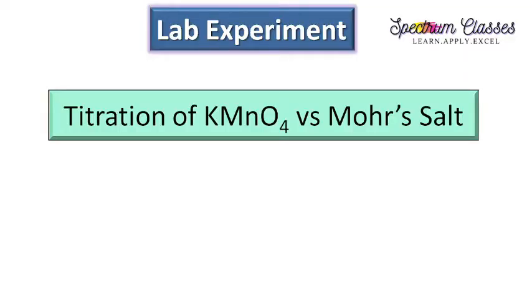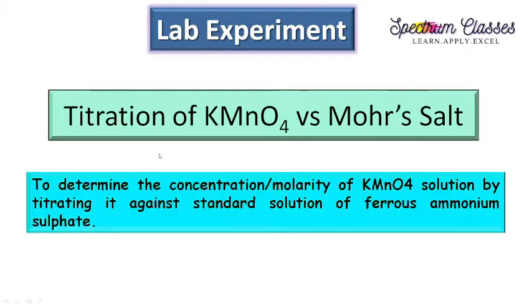Hello everyone, welcome back to Spectrum Classes. In this video we are going to discuss the lab experiment. The aim of the experiment is titration of KMnO4 versus Mohr's salt. In your textbook, the aim may also be written as: to determine the concentration or molarity of KMnO4 solution by titrating it against standard solution of ferrous ammonium sulphate. This important word 'standard' means ferrous ammonium sulphate is used to determine the concentration of KMnO4 solution, and this Mohr's salt has the name ferrous ammonium sulphate.